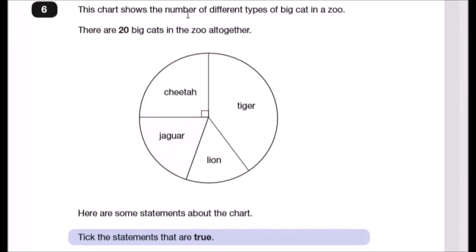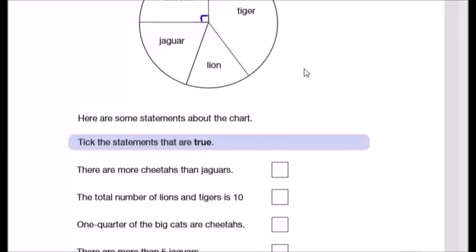Question six: this chart shows the number of different types of big cats in the zoo. There are 20 big cats in the zoo altogether. We've got cheetahs, tigers, jaguars, and lions. Just looking at this pie chart head on, we can see that cheetah seems to represent one quarter because you can see the right angle and this looks like a perfect quarter. Tiger represents the majority, jaguar is less than a quarter, and lion is also less than a quarter, maybe a fifth.